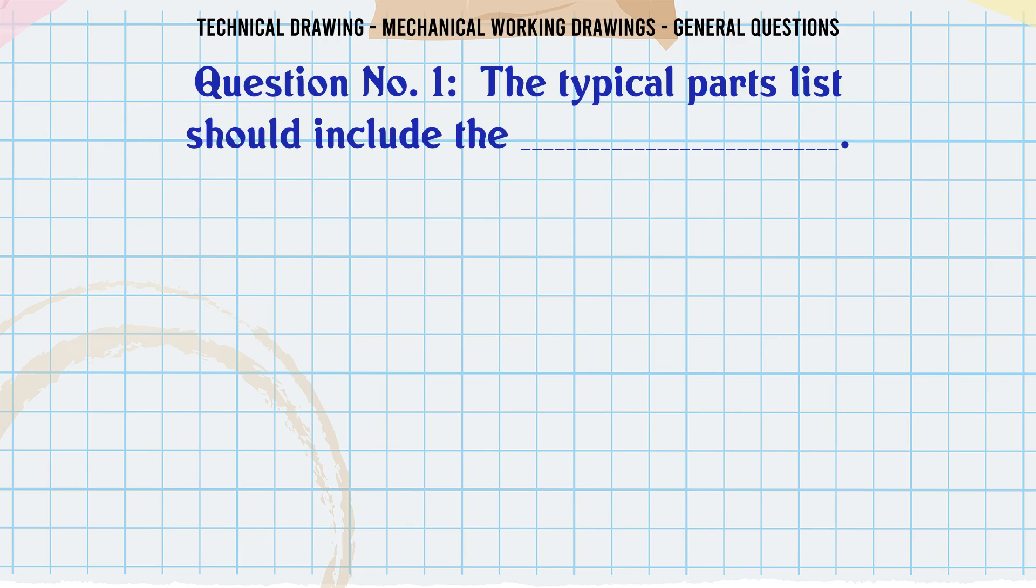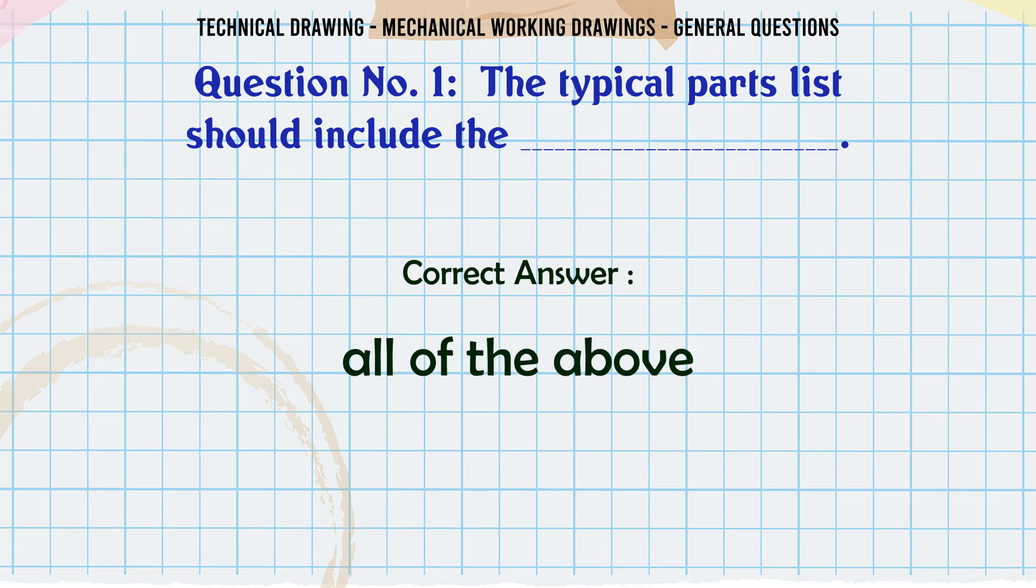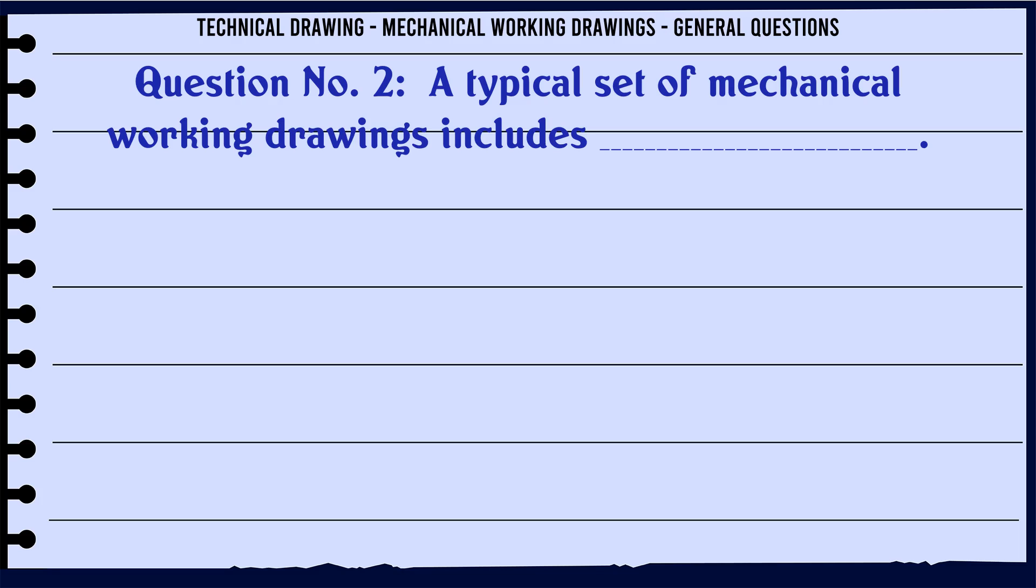The typical parts list should include the: A. Part number, B. Manufacturing material, C. Number of parts needed, D. All of the above. The correct answer is All of the above.